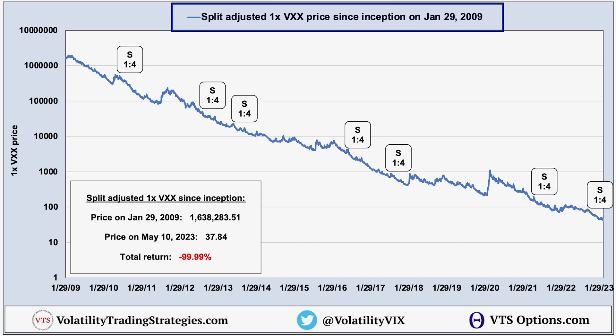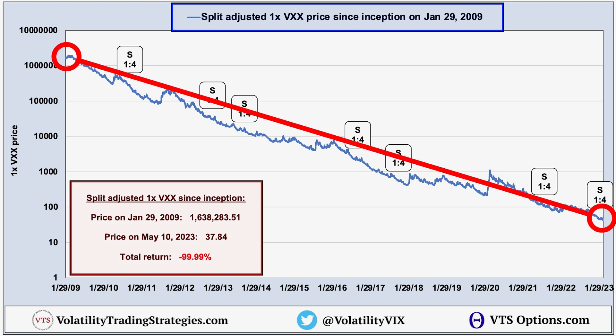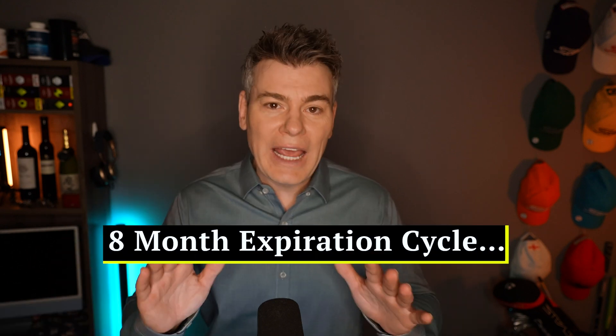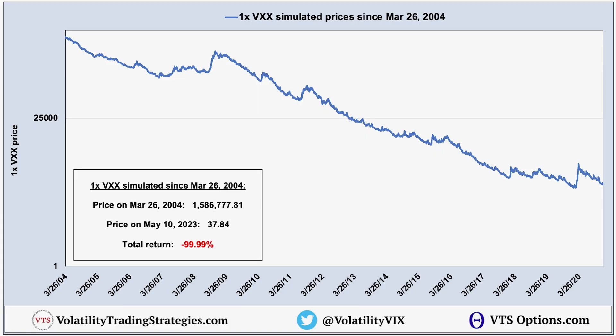Step one to making money in any trade is having a reasonable hypothesis of where the future price is going to be. This chart is showing the split-adjusted price of VXX since its inception on January 29th, 2009. This thing has been trading for about 13 years now, and it doesn't take a genius to see that long-term it does decay downward. Clearly having a short volatility bias is the more profitable side of the trade, but how much does it decay exactly per week or per month? Since volatility ETPs derive their price based on a known methodology of rolling VIX futures — not supply and demand — we can simulate prices back to the launch of VIX futures in March 2004.